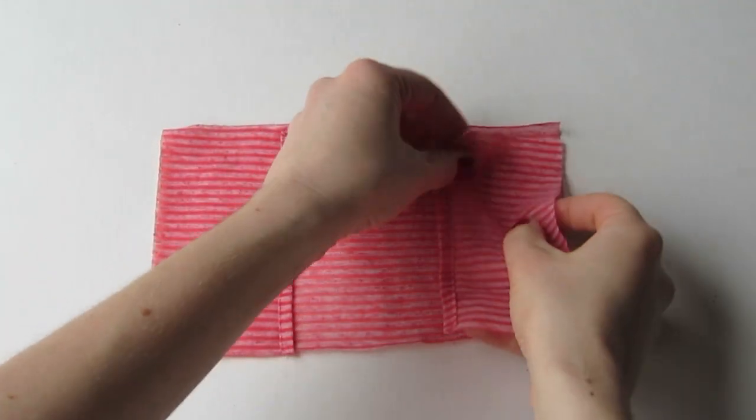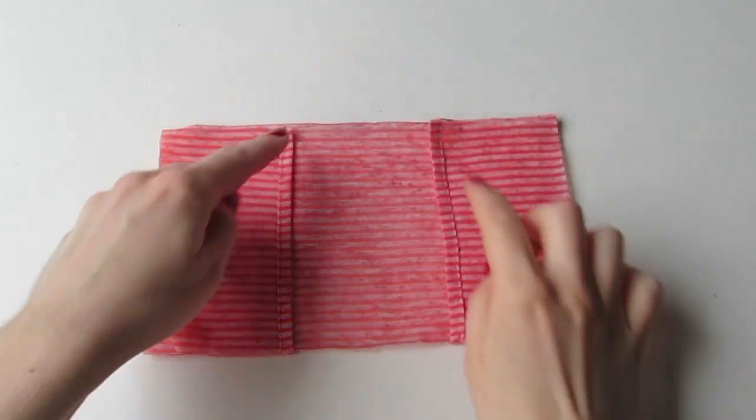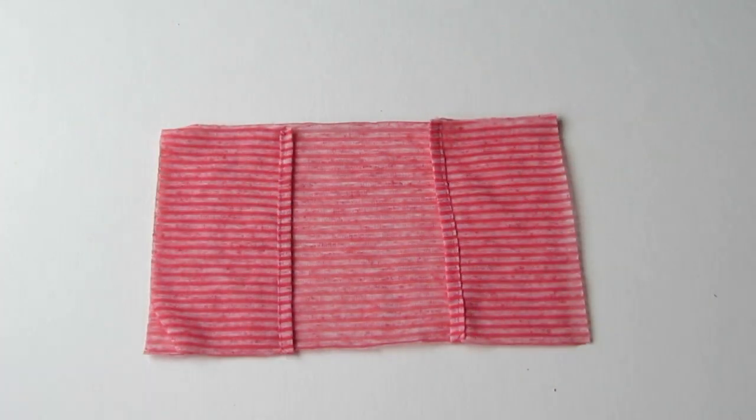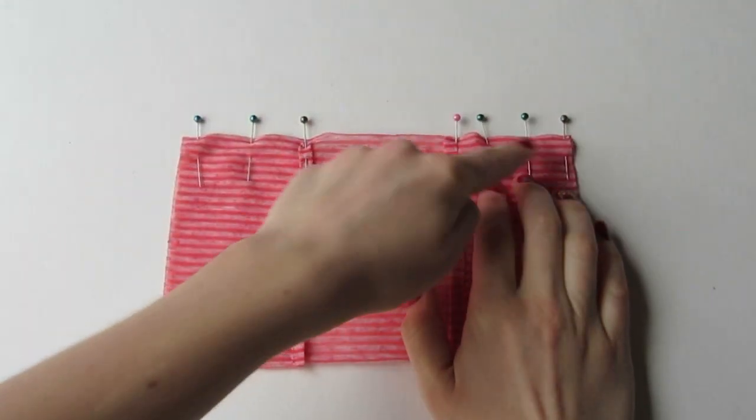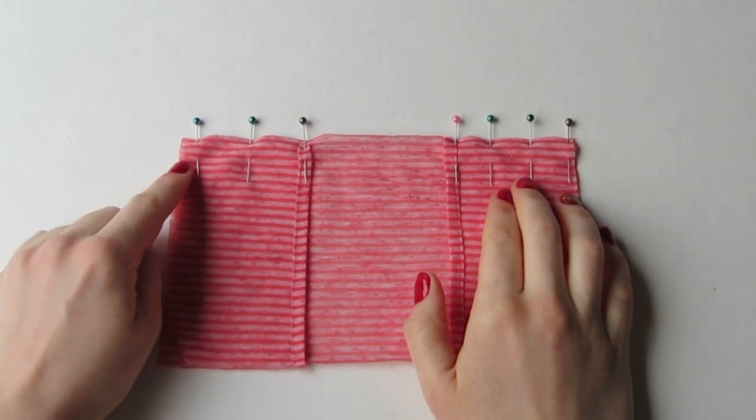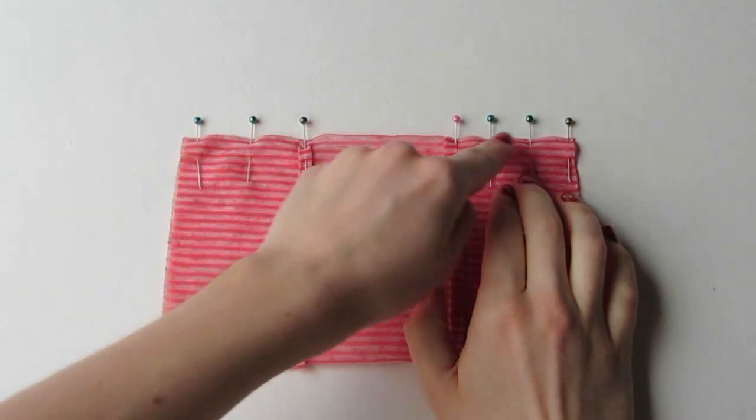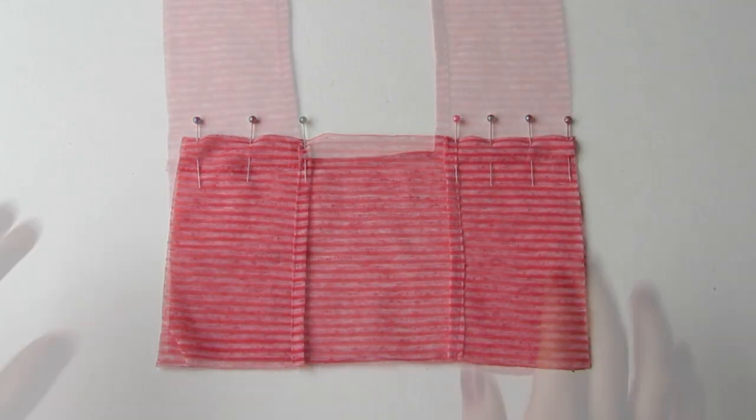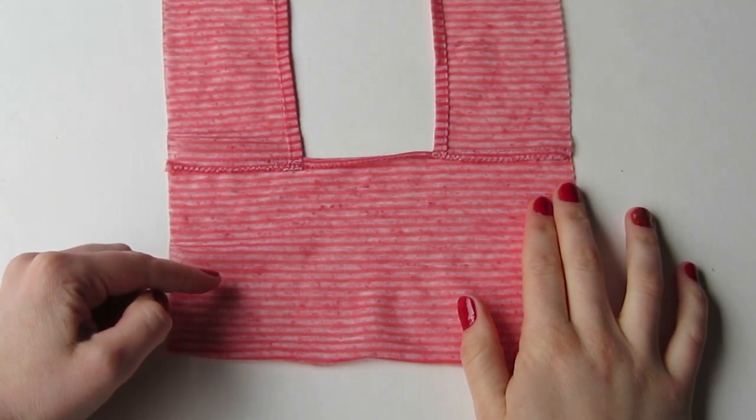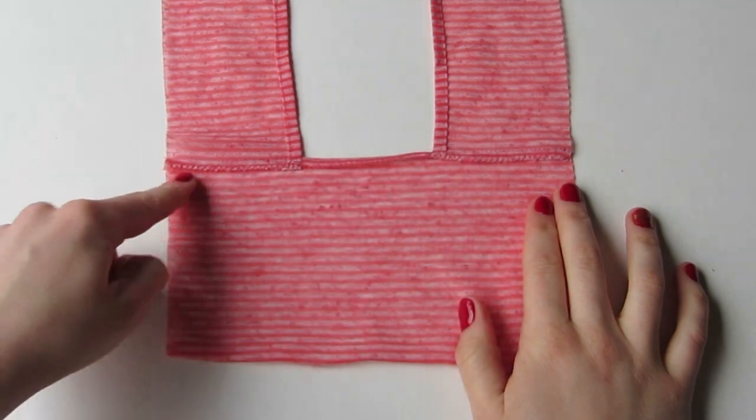Pin the pieces together, then stitch them down at a quarter inch. And then go ahead and zigzag across this entire top edge. Press the seam towards the back, and then top stitch it down the whole way across so that you catch this folded edge as well.